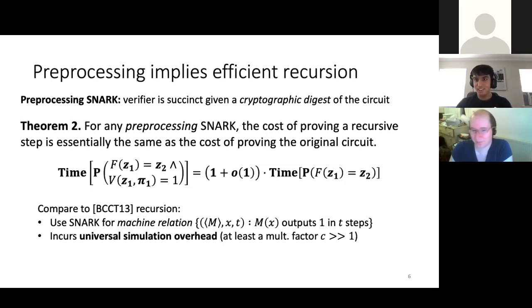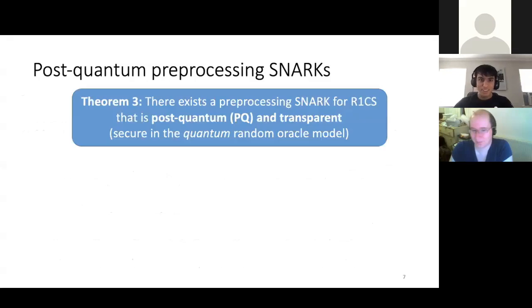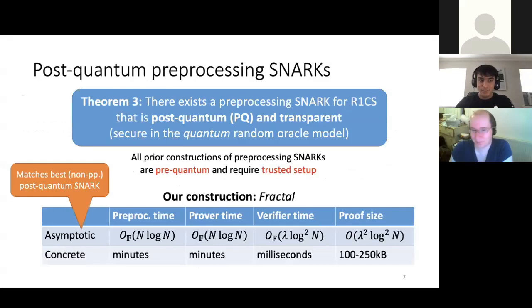So essentially, as you go to recurse, you have to keep on changing this machine description, because you're verifying a slightly different machine each time. And to get unbounded recursion, you'll need a universal simulator, which means that you get a universal simulation overhead. So this means that you blow up the statement, the size of the statement you're proving, by a multiplicative factor. In practice, it's at least greater than one. In practice, these are very large constants. So this means it's a high overhead to recurse a general snark. So this tells us that it's preprocessing that is what made PCD efficient. And therefore, if we want to get efficient PCD, our goal should be to create a preprocessing snark. So that's exactly what we're going to do. The next thing we do is create a preprocessing snark for R1CS that is post-quantum and transparent. All prior constructions of preprocessing snarks were pre-quantum and required a trusted setup.